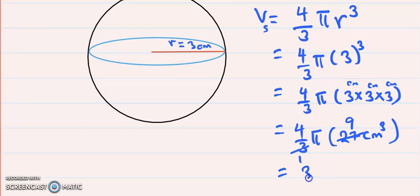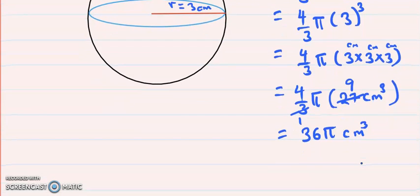4 times 9 is 36, so we have 36π cm³. Let us take π to be 3.14 and substitute that in.